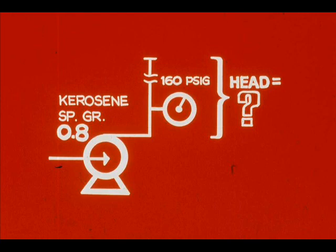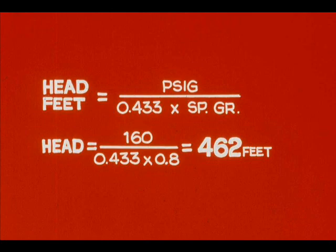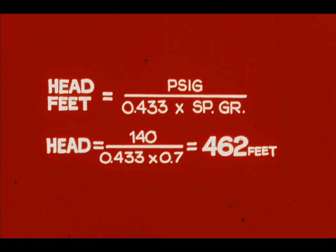Now what would be the head if this same centrifugal pump were pumping kerosene, specific gravity 0.8, if the discharge pressure were 160 psig? Using the formula h equals p divided by the product of 0.433 times specific gravity, substituting 160 for p and 0.8 for specific gravity, we get 462 feet for the second time. For light naphtha, substituting 140 for p and 0.7 for specific gravity, we again get 462 feet.